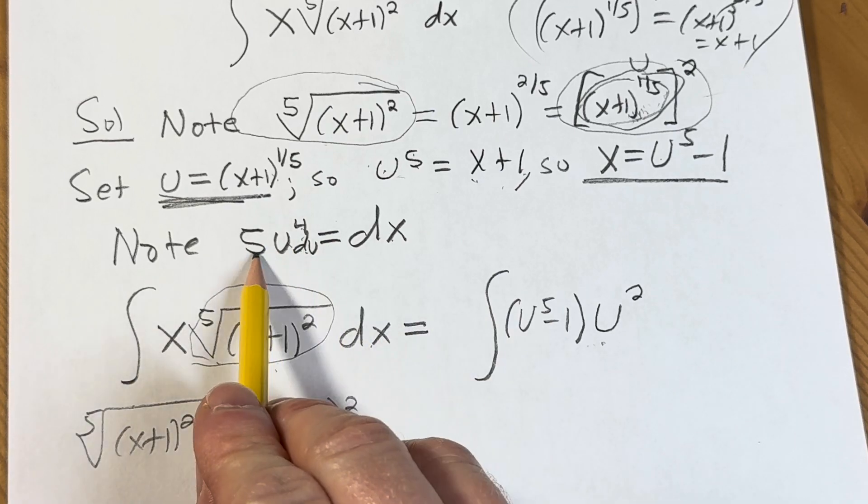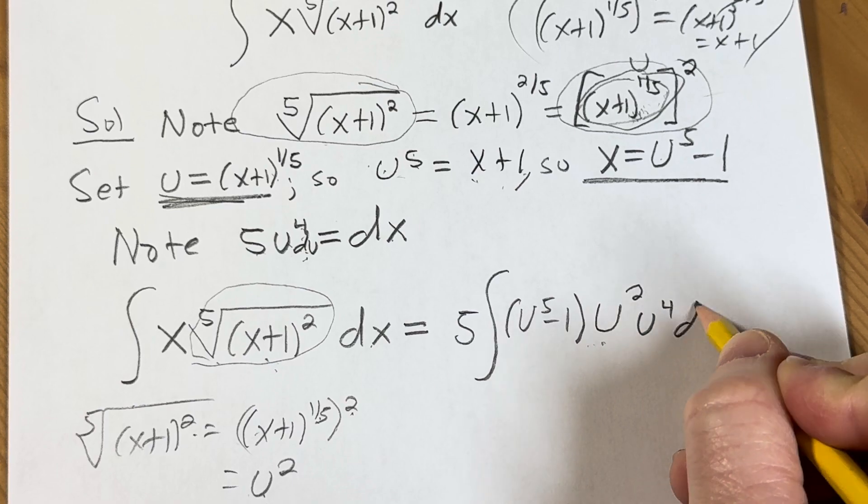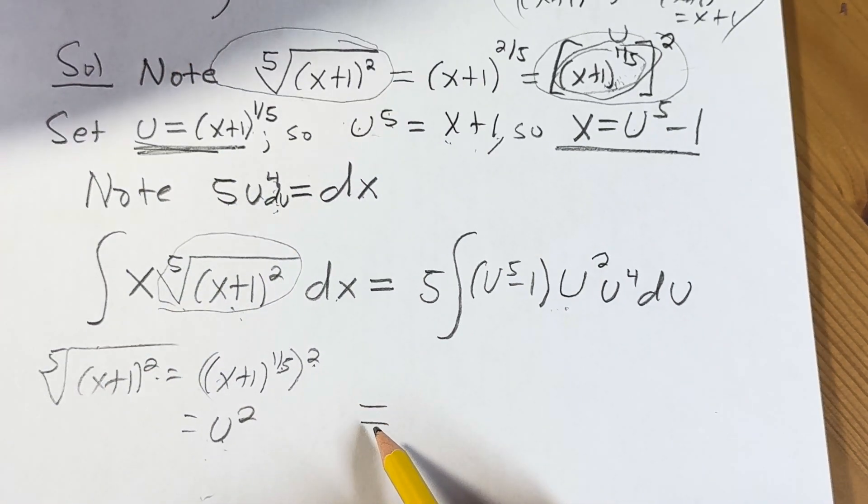And then dx is 5u to the 4th du. So I'm going to pull out that 5. Leave the u to the 4th here and put the du here. Let's clean this up. So this is equal to, this is equal to.